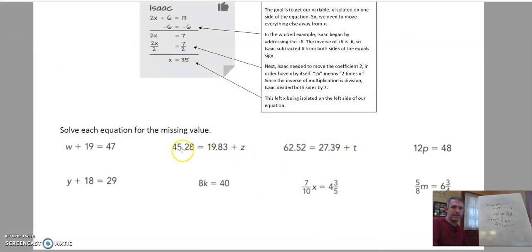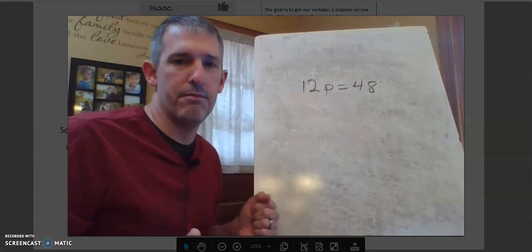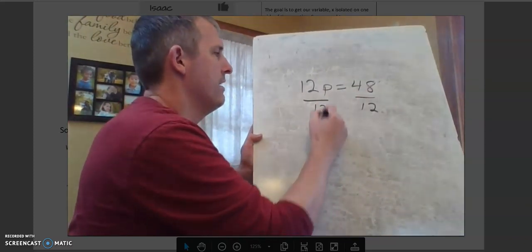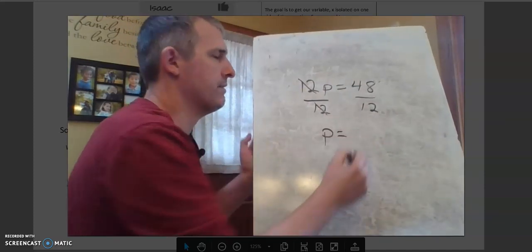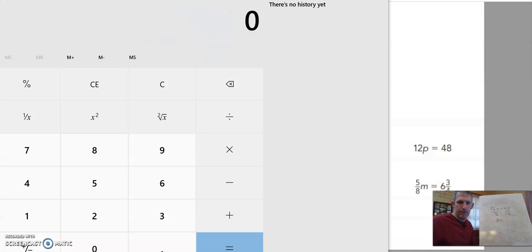This one's very similar to that, it just has decimals. Same with this one. Let's look at this one. 12p equals 48. Remember when I have a number next to a variable, it means to multiply. So what's happening to my variable is it's being multiplied. So I want to do the opposite of multiplication, which is division. So I'm going to divide both sides by 12. And what's going to be left over here? These simplify and I get p equals 48 divided by 12. 48 divided by 12 gives me a 4.